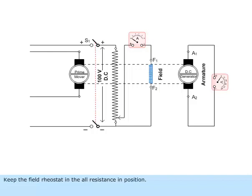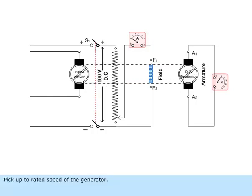Keep the field rheostat in the all resistance position. Start the prime mover motor coupled to the DC generator. Bring it up to rated speed of the generator.